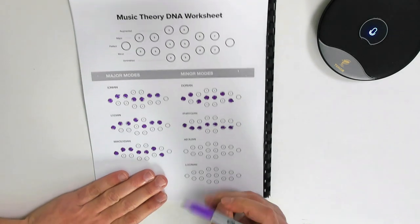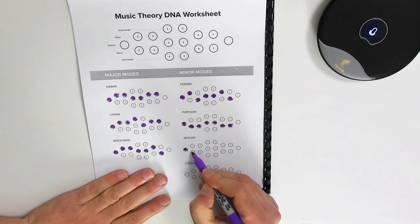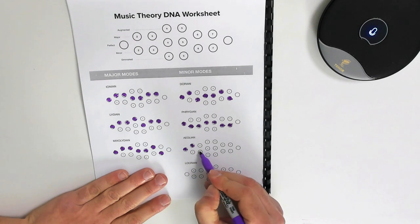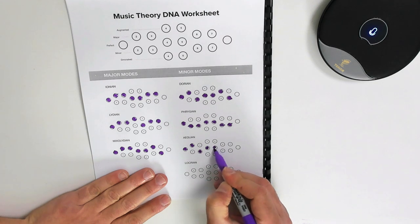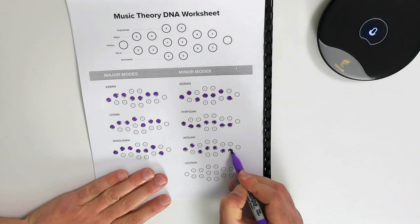Aeolian will have a one, a major second, a minor third, perfect fourth, perfect fifth, a minor sixth, and a minor seventh.